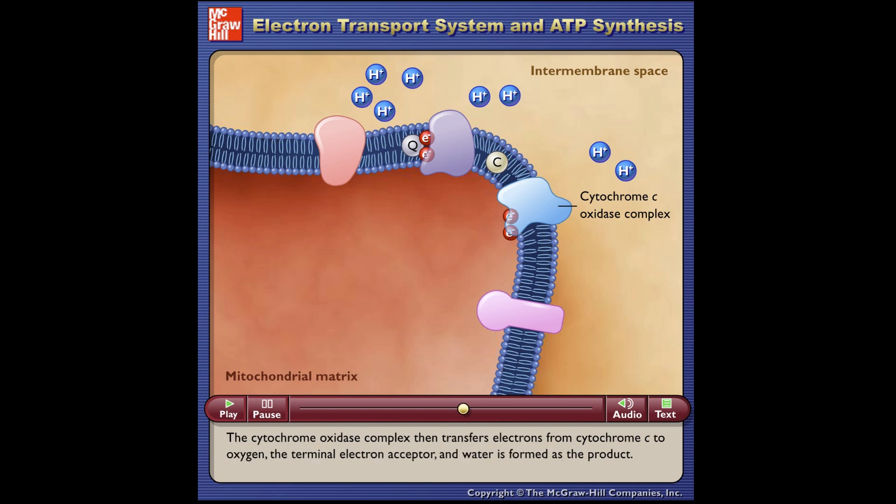The cytochrome oxidase complex then transfers electrons from cytochrome C to oxygen, the terminal electron acceptor, and water is formed as the product.